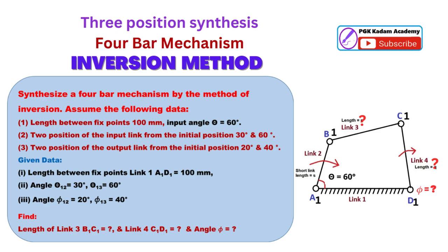Two positions of the output link from the initial position are given: 1. First position of the output link, angle phi 12 equal to 20 degrees. 2. Second position of the output link, angle phi 13 equal to 40 degrees.